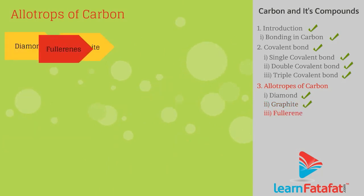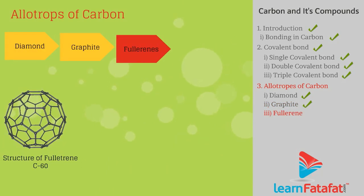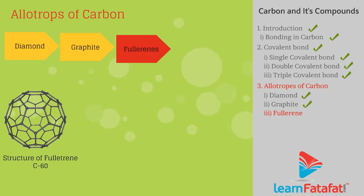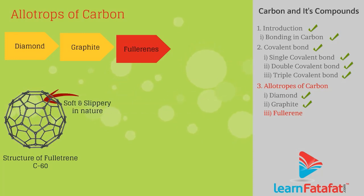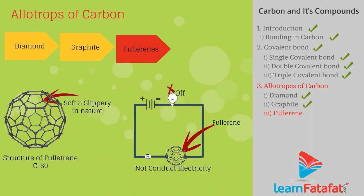Fullerenes: In fullerene, C60 consists of carbon atoms arranged in the shape of a football. Fullerene forms are soft, slippery, and bad conductors of electricity.